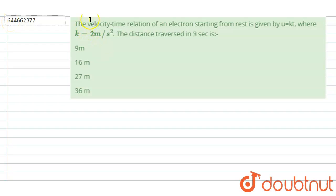Hello everyone. The velocity-time relation for an electron starting from rest is v equals kt, where k is 2 meters per second squared. Find the distance traveled in 3 seconds.